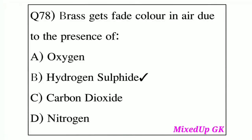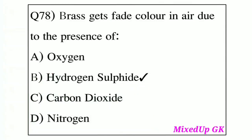Question number 78: A brush gets a faded color in the air due to the presence of what? Option A: Oxygen. Option B: Hydrogen Sulphide. Option C: Carbon Dioxide. Option D: Nitrogen. The answer is Option B, Hydrogen Sulphide. Hydrogen Sulphide causes the brush or silver utensils to tarnish.